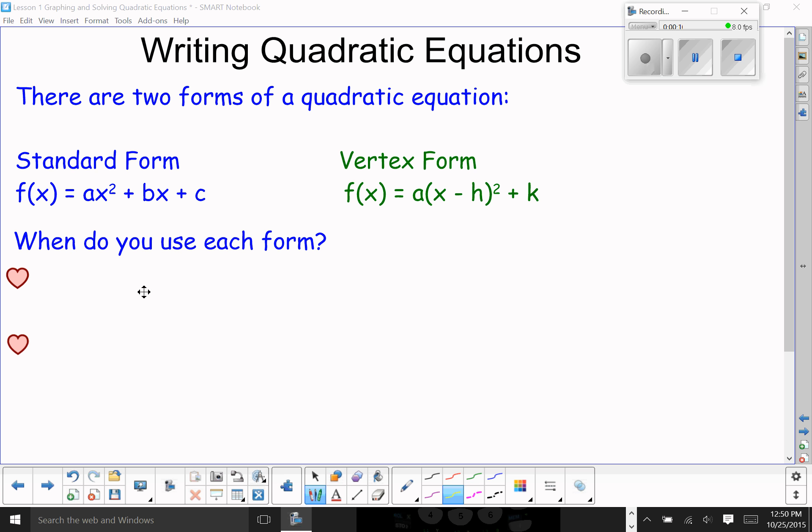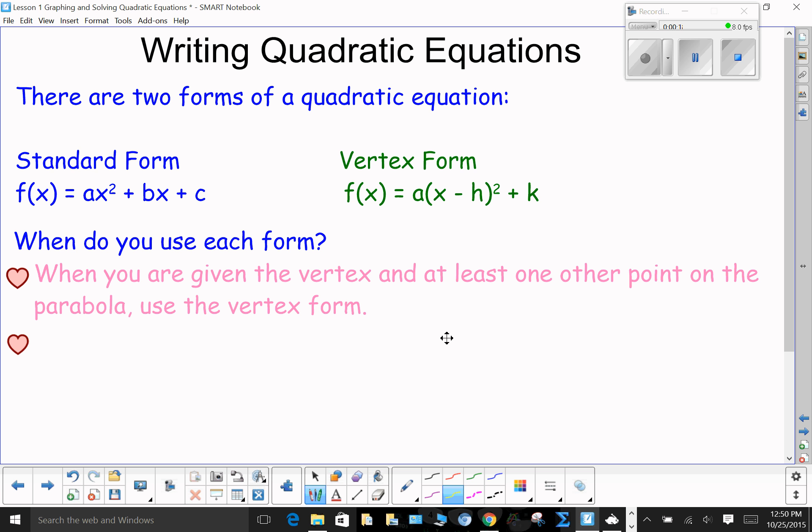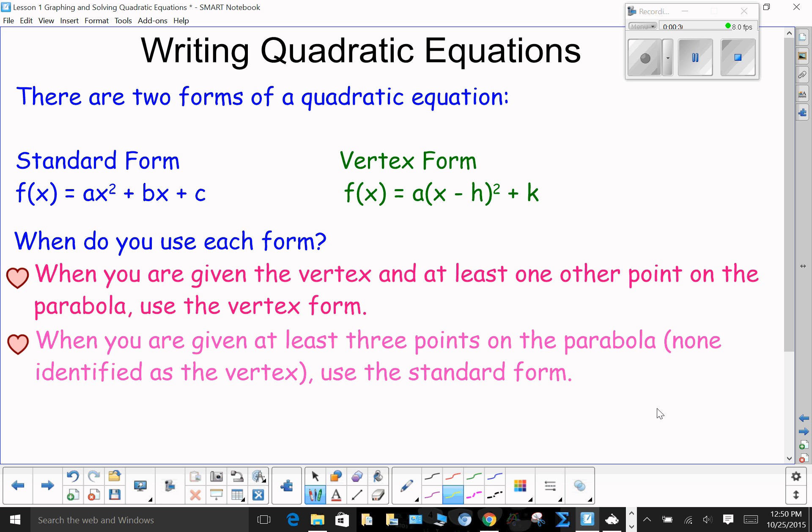When do you use each form? Well, when you are given the vertex and at least one other point on the parabola, use the vertex form. That's the easiest one. When you are given at least three points on the parabola, none of them are identified as the vertex. It doesn't mean that one isn't, but none of them are identified as the vertex. You're going to write the equation in standard form.